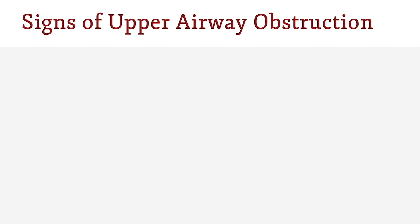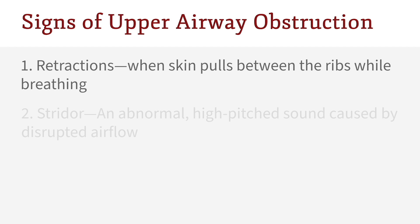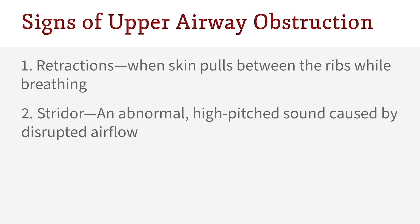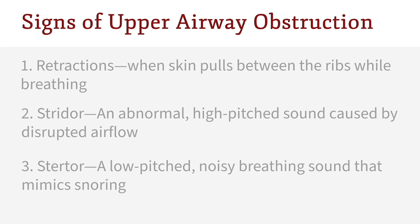Signs of upper airway obstruction include retractions, in which the skin over the chest pulls in between the ribs when a child has difficulty breathing. Stridor, which is an abnormal high-pitched sound that is commonly caused by disrupted airflow. And stertor, which is a low-pitched, noisy breathing sound that mimics snoring.